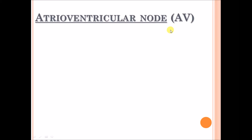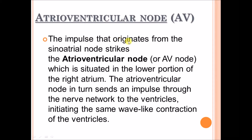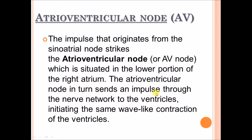What is the atrioventricular node, or AV node? The impulse that originates from the sinoatrial node strikes the atrioventricular node, or AV node, which is situated in the lower portion of the right atrium. The atrioventricular node then sends an impulse through the nerve network to the ventricles, initiating the same wave-like contraction of the ventricles.